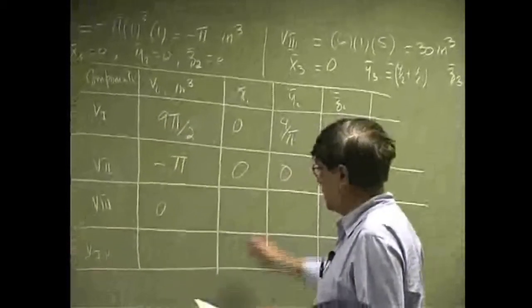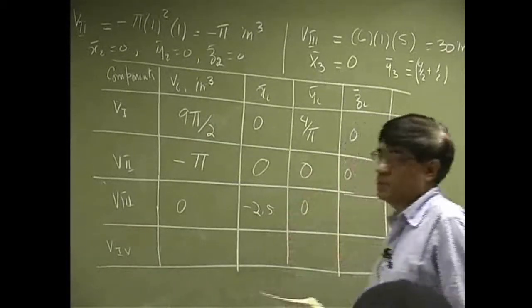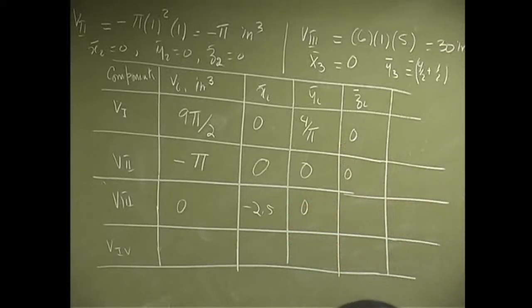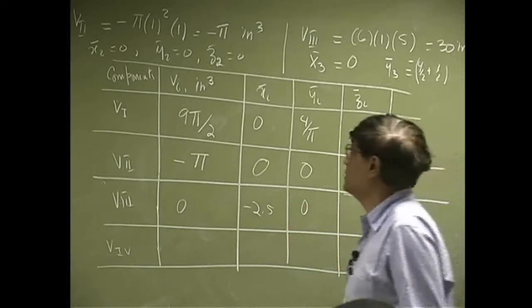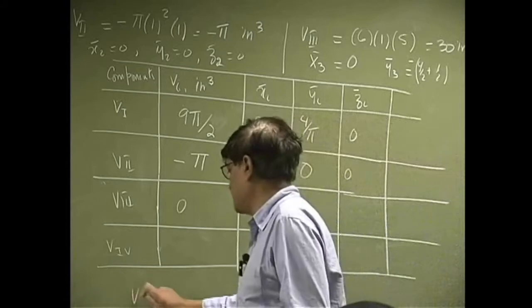Then you get negative 2.5 and zero. Then we need the third one, we'll be looking at V4.